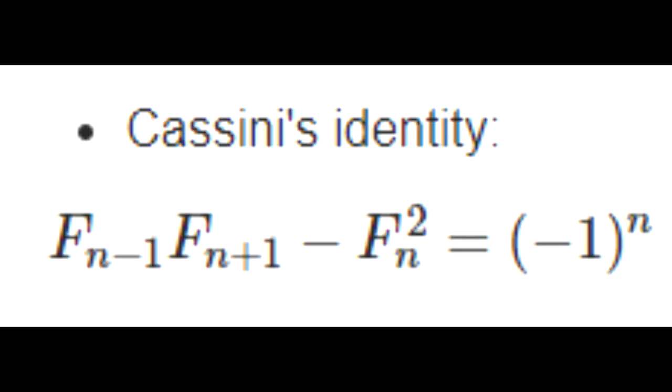Alright now there's a few properties that are pretty interesting that you probably haven't heard about yet but they might actually come in handy. The first property is Cassini's identity.